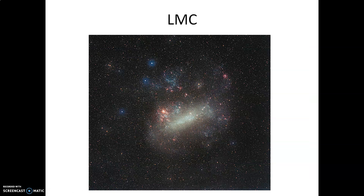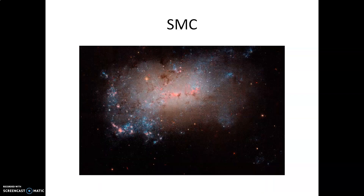The large Magellanic cloud is about 150,000 light years away and consists of several million stars. There is some star formation taking place within the LMC, but the overall shape is somewhat amorphous — that's why it's referred to as a dwarf irregular. The small Magellanic cloud is smaller than the large Magellanic cloud. Star formation is also taking place within it, and right here is a large amount of young star clusters.